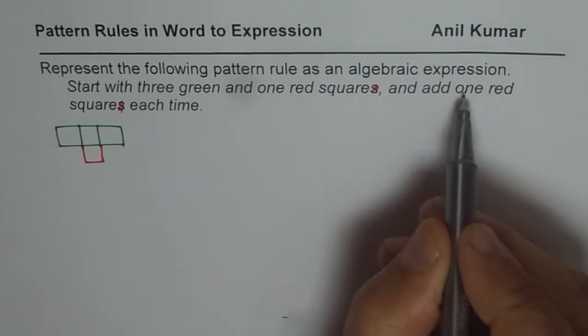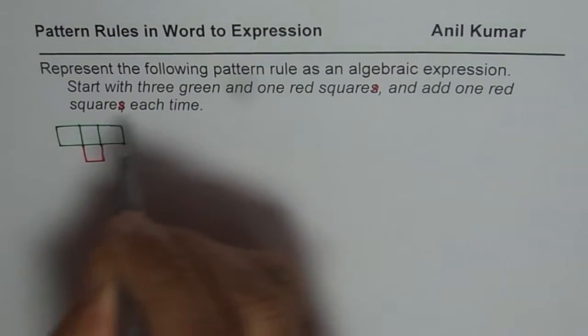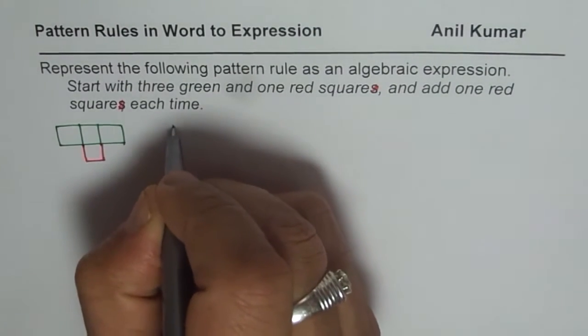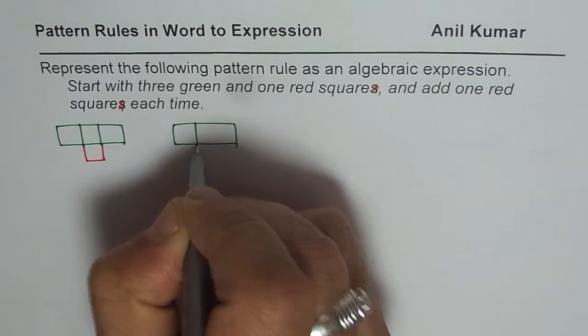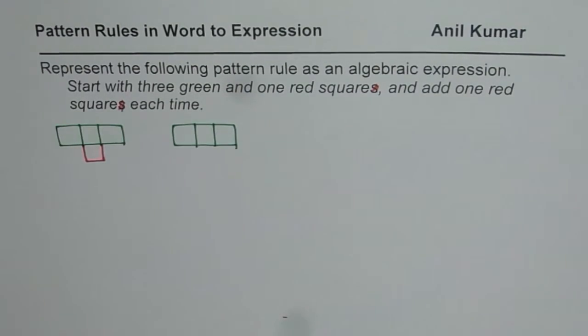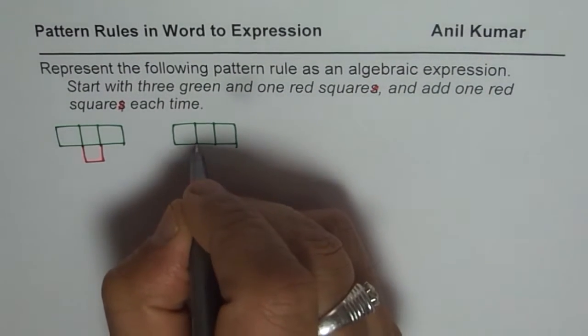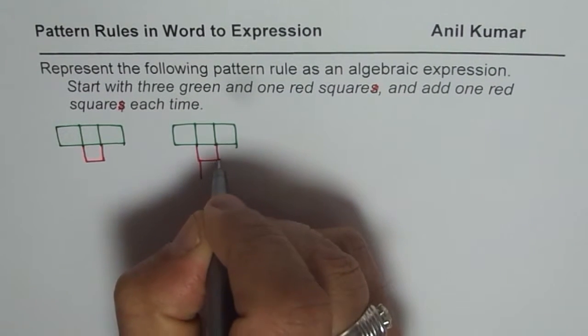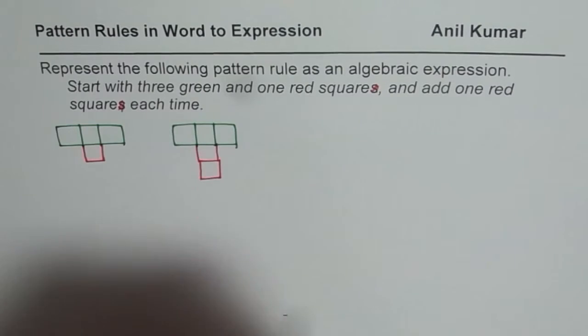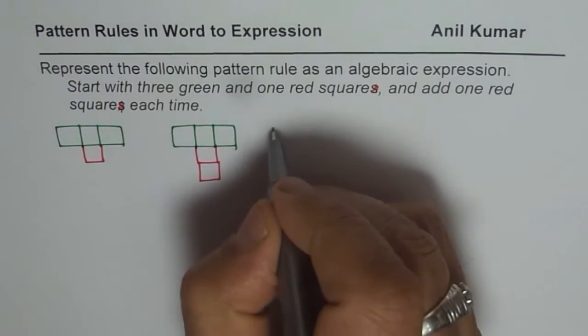And it says add 1 red square each time. So we again have 3 fixed green squares. Kind of like this. And 1 red was originally there. We add 1 more. Then we get our figure number 2, and we follow this pattern.